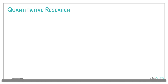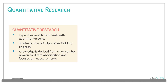To start with, what is quantitative research? Quantitative research is defined as a type of research that deals with quantitative data. In other words, it relies on the principle of proof or verifiability. The knowledge is derived from what can be proven by direct observation, and it focuses on measurements.